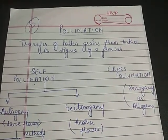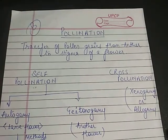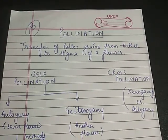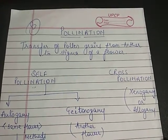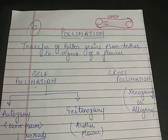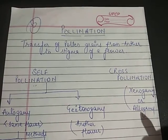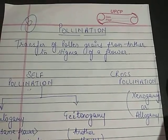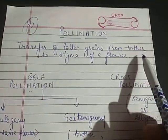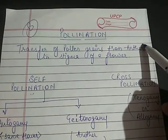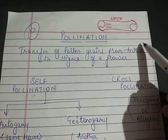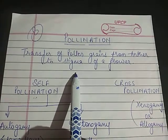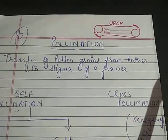Welcome back students. Today's topic will be further in flowering plants reproduction — we are talking about pollination. Pollination is the transfer of pollen grains from the anther of one flower, which could be the same or a different flower, to the stigma of the same flower or a different flower.